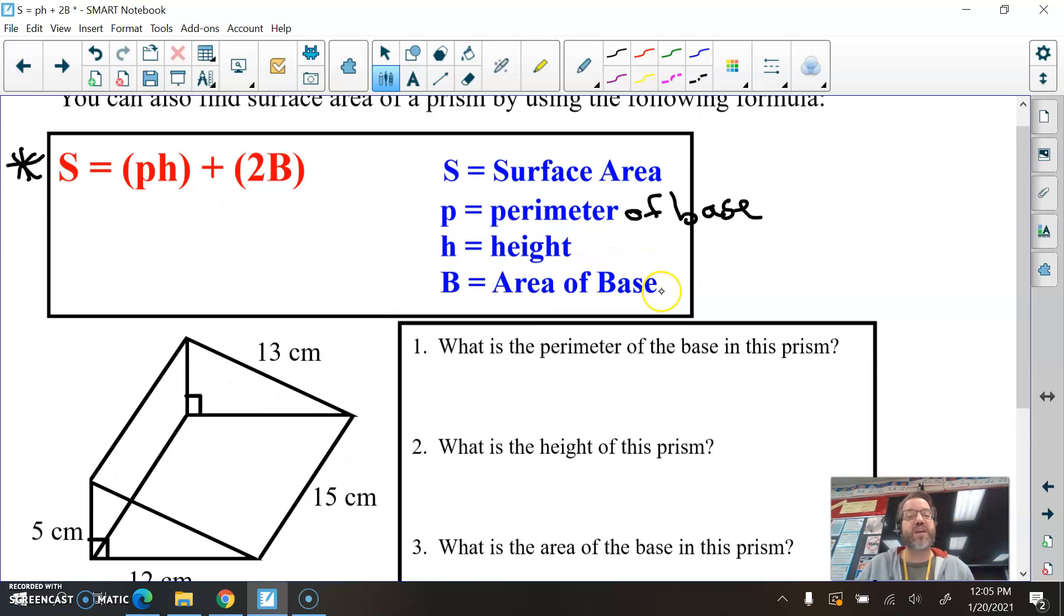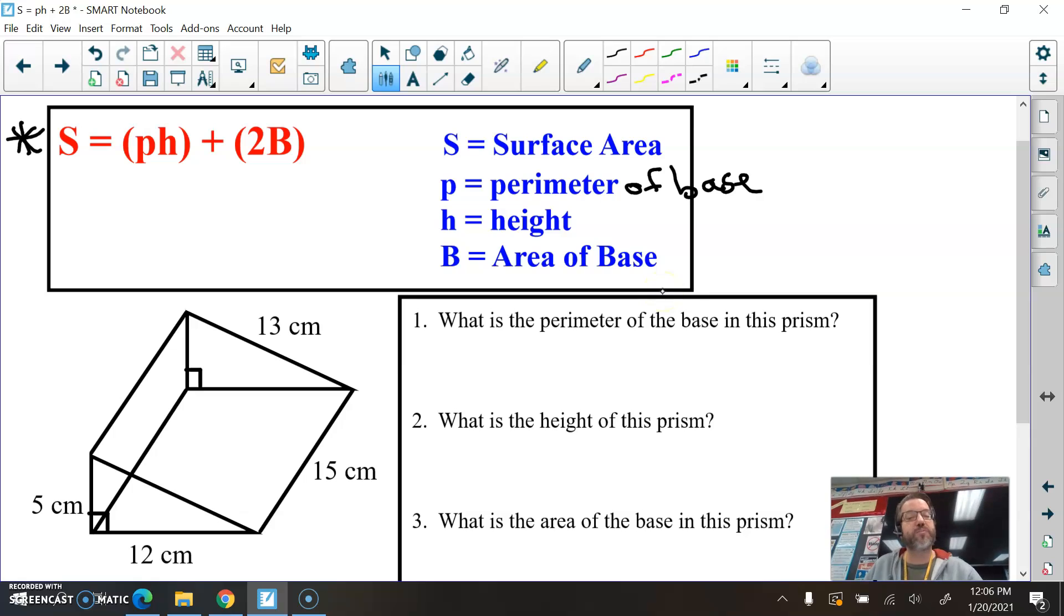So look at this example right here. We have a triangular prism this time. Because you see how we have a base here that's a triangle. Remember, base does not mean bottom. Base does not mean bottom. The base in a prism, bases are always parallel to each other. And we have a triangle here. We have another triangle here that runs parallel to it. They happen to be the only faces in this figure that are parallel to each other. Those are your bases.